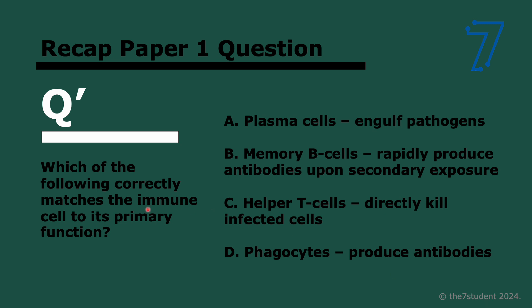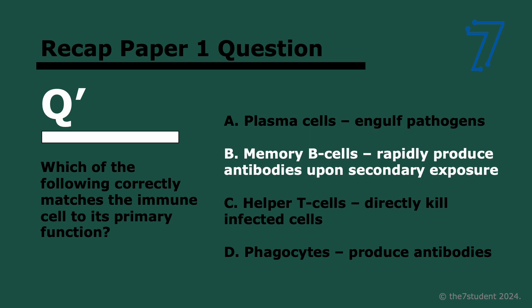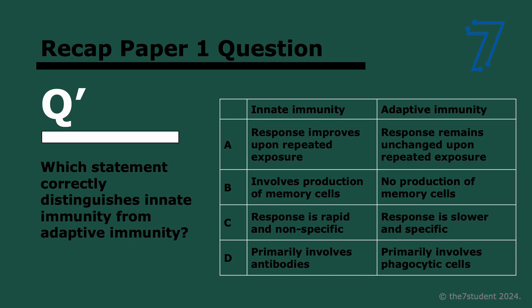Which of the following correctly matches the immune cell to its primary function? Memory B cells produce antibodies upon secondary exposure. Plasma cells produce antibodies — they don't engulf pathogens. Helper T cells do not kill infected cells; they just help B cells activate. And phagocytes engulf pathogens.